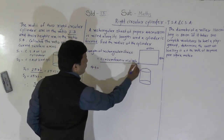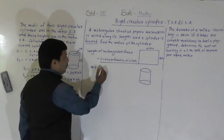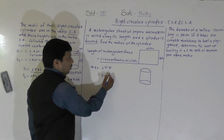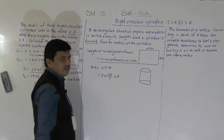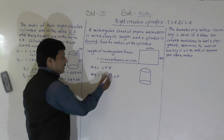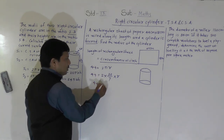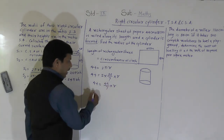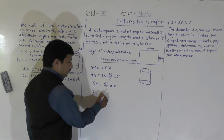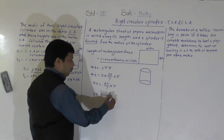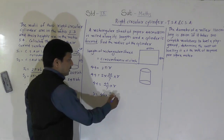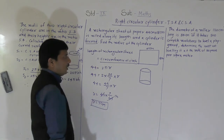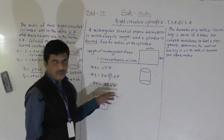The circumference is 2πr = 44. So 2 × (22/7) × r = 44, which gives (44/7) × r = 44. Solving, r = 44 × (7/44) = 7 cm. So the radius of the cylinder is 7 cm.